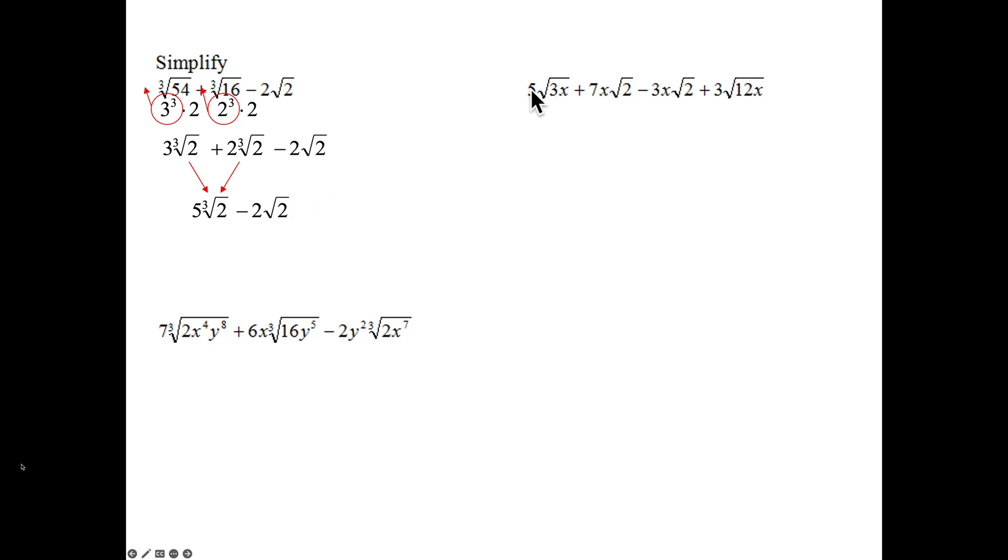Next example, here, 5 square root of 3x plus 7x square root of 2. So far, everything's looking good. Minus 3x square root of 2 plus 3, whoops, 12 can be broken down. So that's 4 times 3, or 2 squared, which can come out to the front, multiply to the 3. That's going to be 6 square root of 3x.